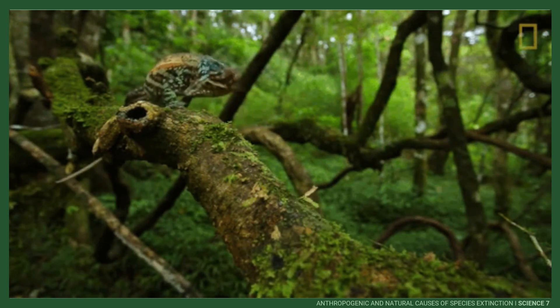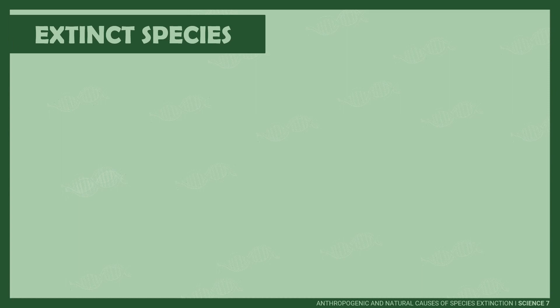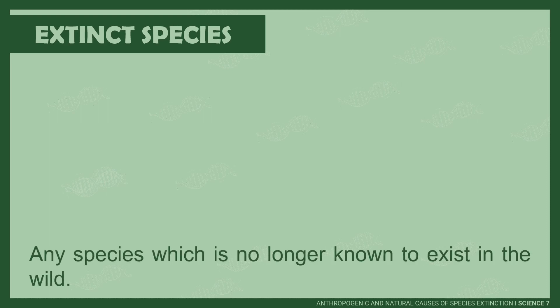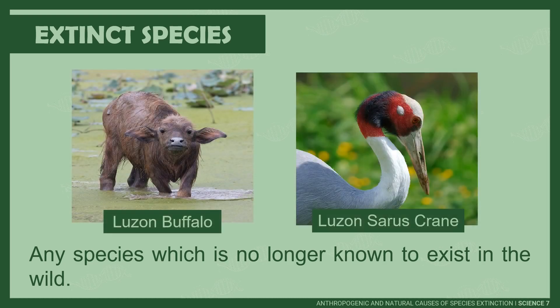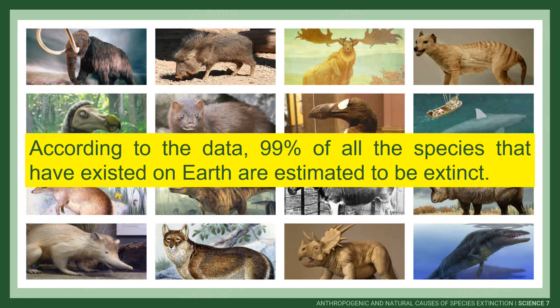Because of this, our biodiversity faces a big challenge that, if not managed, may lead to species extinction. Many species are at the peak of extinction due to some factors. Extinct species are any species which no longer exist in the environment. It occurs when the last member of the species dies. Luzon buffalo and Luzon cyrus grain are examples of extinct species. According to the data, 99% of all the species that have existed on Earth are estimated to be extinct.